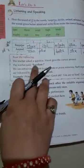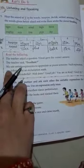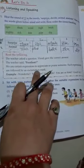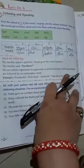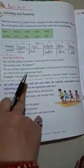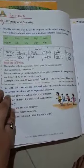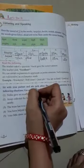Read the following: The teacher asked a student. We got the correct answer. The teacher said excellent. We use certain expressions to appreciate or praise someone. Such expressions are followed by an exclamation mark. Example: wonderful, well done, good job.